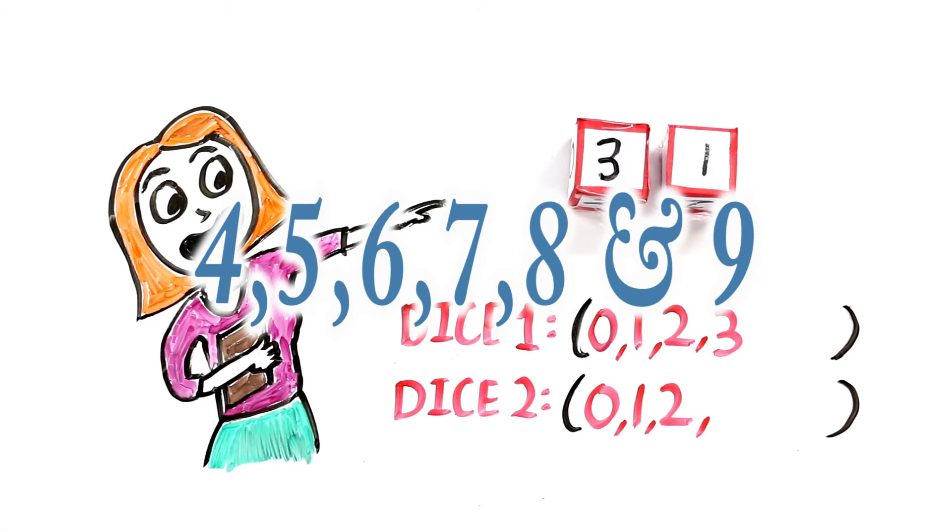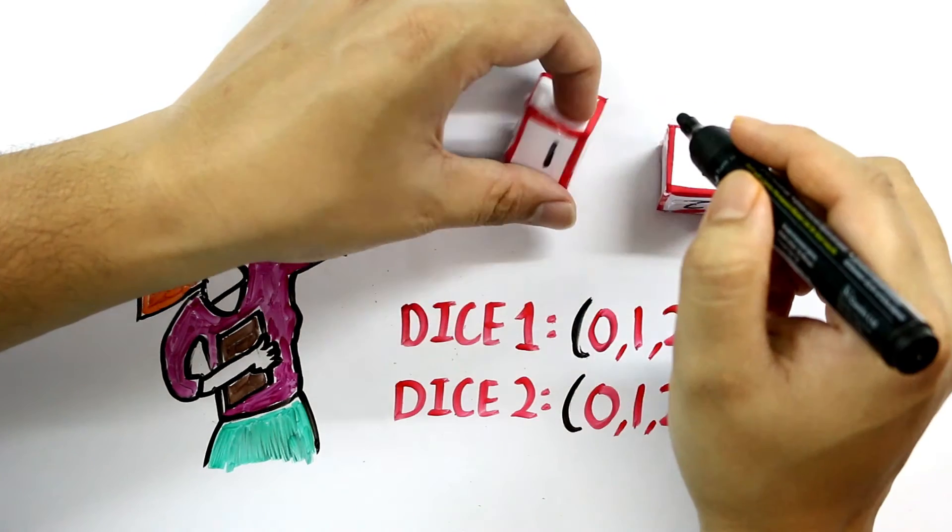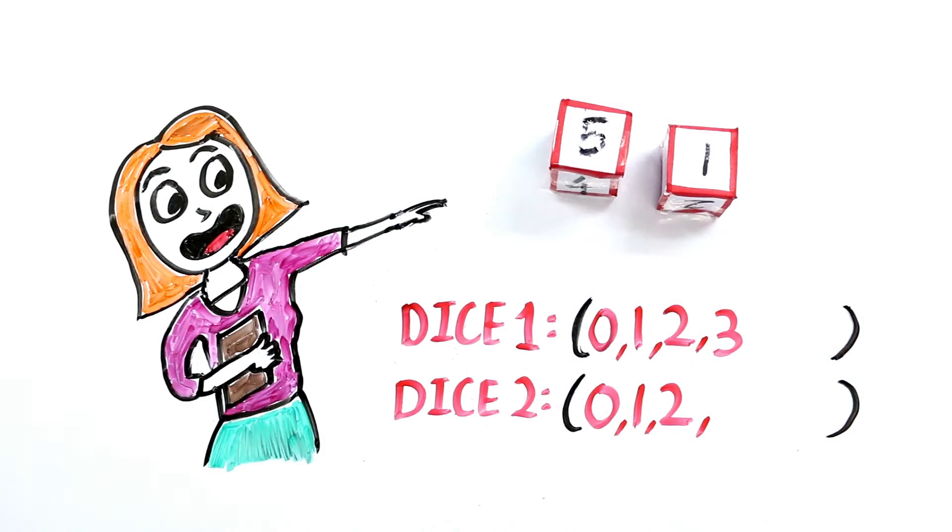We have not yet written 4, 5, 6, 7, 8 and 9. So let's write them. On the first dice, we just have 2 spaces left so we'll write 4 and 5 here